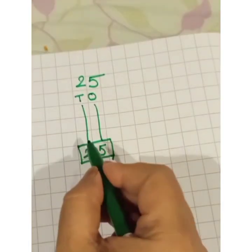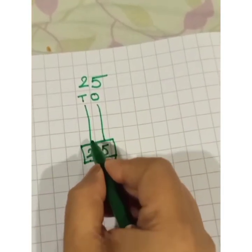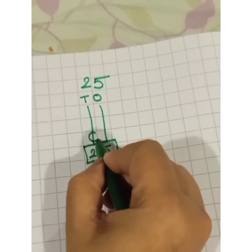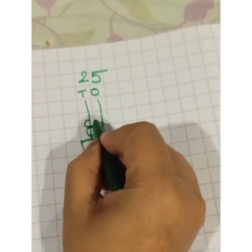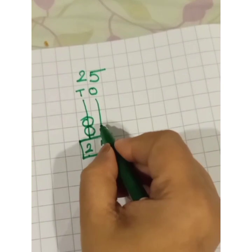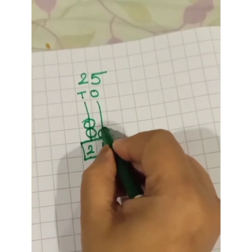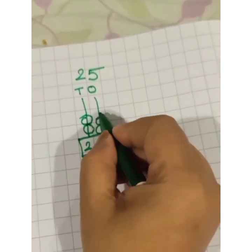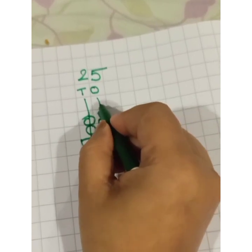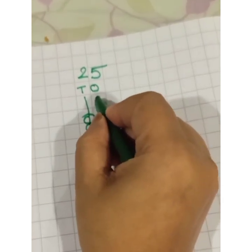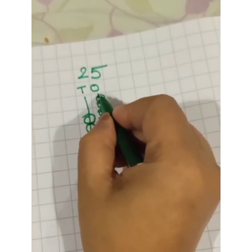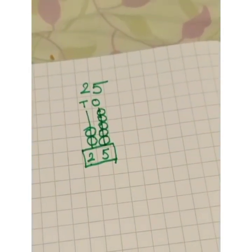In the tens place, it is 2, we will draw here 2 beads. In the ones place, it is 5, we will draw here 5 beads. 2, 3, 4, 5. So did you understand children?